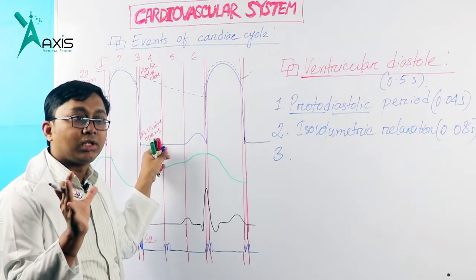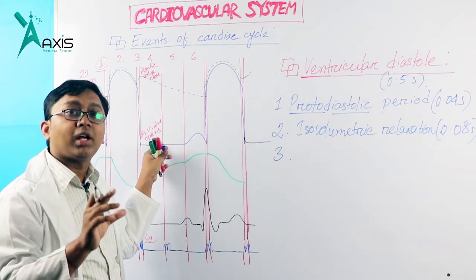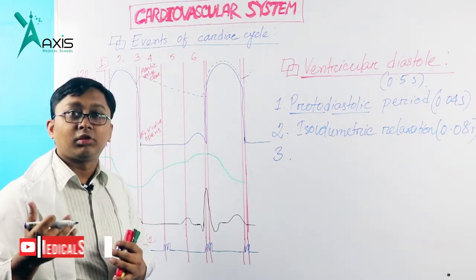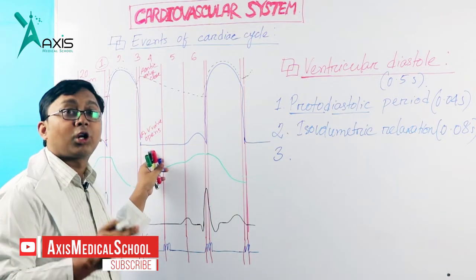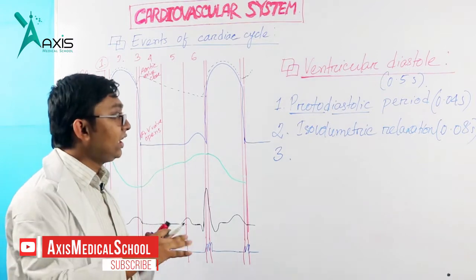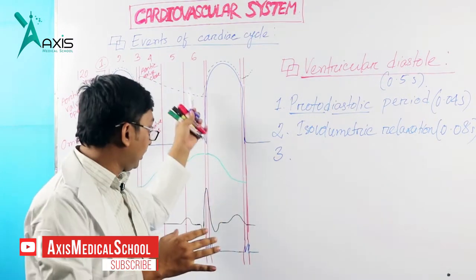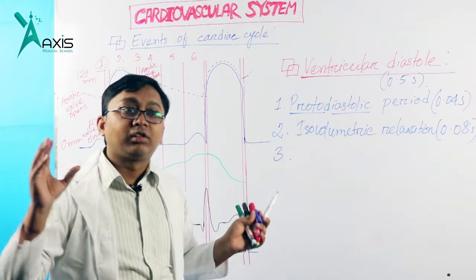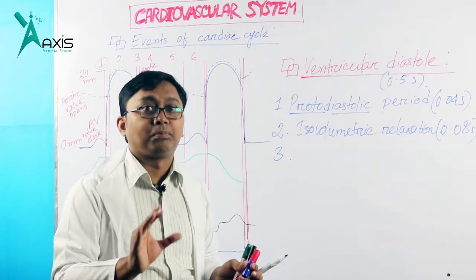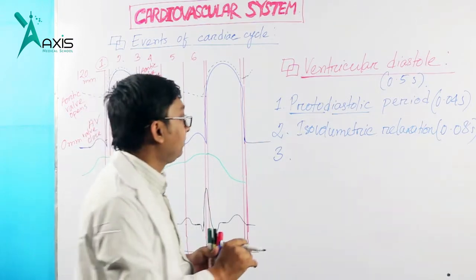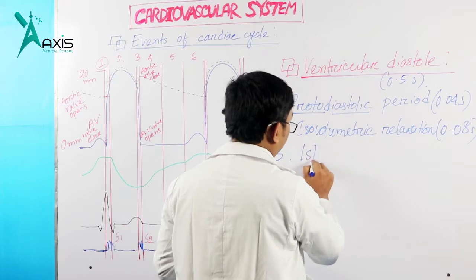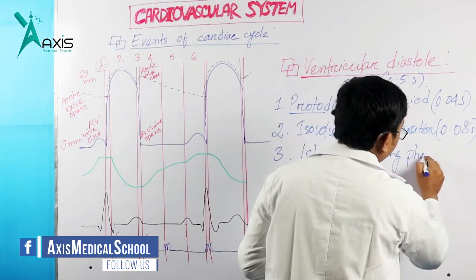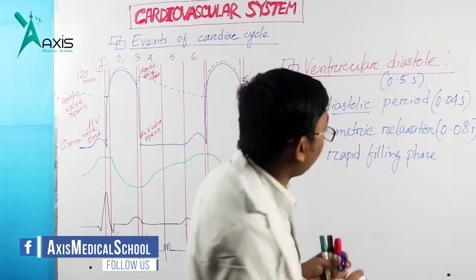When the ventricle relaxes, ventricular pressure falls. When the ventricular pressure falls below atrial pressure, the AV valves — mitral and tricuspid — open. Blood rushes from the left atrium into the left ventricle. This is the first rapid filling phase, lasting about 0.113 seconds.